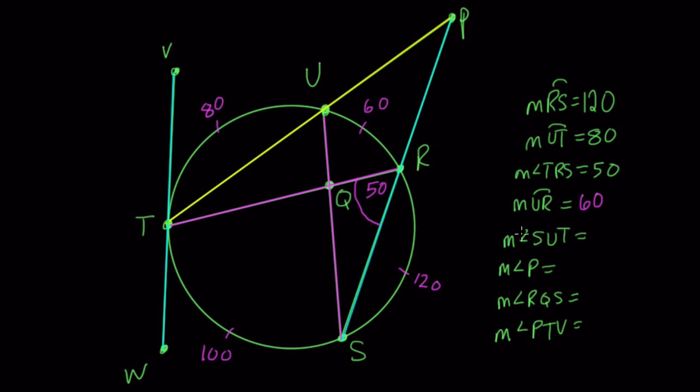Now we want to find the measurement of angle SUT. That's this angle right here. Well, this angle is also an inscribed angle because it's an angle formed by two chords. And it's half the measure of the arc it intercepts, which in this case is the arc ST, which is a measure of 100. So it's half of that or 50. So we're just working backwards. Before, we wrote the measure of the arc from the angle. Now we measure the angle from the arc here.